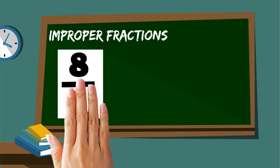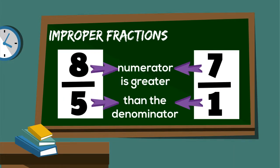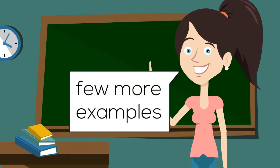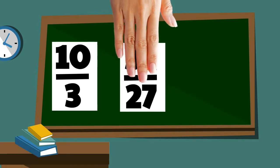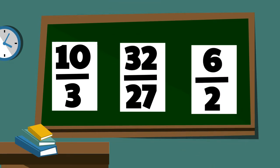Example, 8 by 5 and 7 by 1. Numerator is greater than the denominator. Few more examples of improper fractions are 10 by 3, 32 by 27, and 6 by 2. These all are improper fractions because the numerator is greater than the denominator.